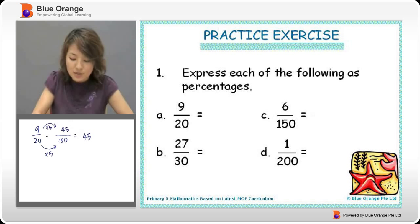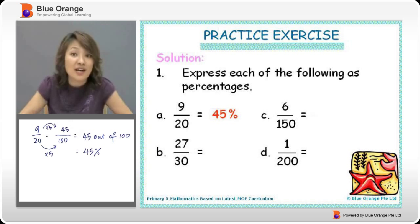This means 45 out of 100. That means 45 over 100. You get 45%.